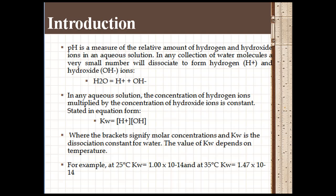The value of dissociation constant depends on temperature. At 25 degrees Celsius, Kw is 1.0 × 10^-14, and at 35 degrees Celsius it becomes 1.47 × 10^-14.